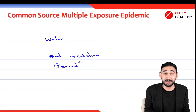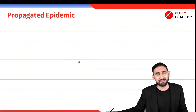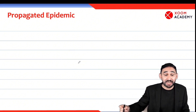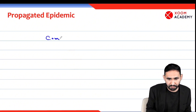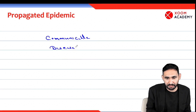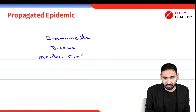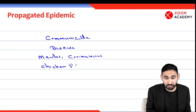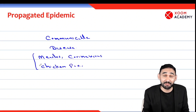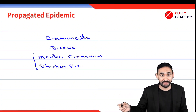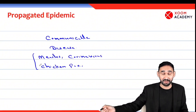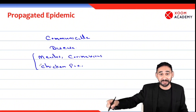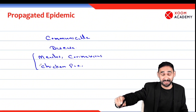When a university asks: someone has taken food from a hotel and developed food poisoning — this is common source single exposure. But someone is drinking water from a well — this is common source repeated exposure epidemic. Exposures are different in different persons: one has four exposures, another has six. This epidemic also has a short incubation period, appears suddenly and disappears suddenly. Then what is propagated epidemic? As the name indicates, there is chain formation — epidemic of communicable diseases like measles and chickenpox.